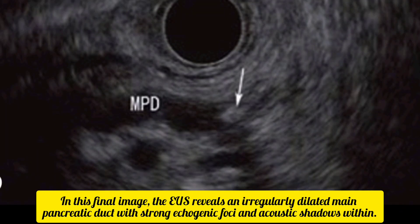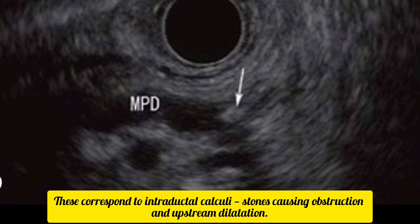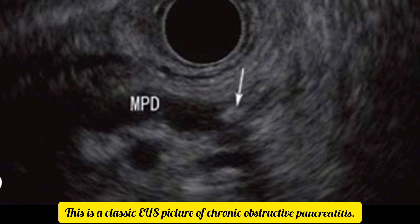In this final image, the EUS reveals an irregularly dilated main pancreatic duct with strong echogenic foci and acoustic shadows within. These correspond to intraductal calculi — stones causing obstruction and upstream dilatation. This is a classic EUS picture of chronic obstructive pancreatitis.